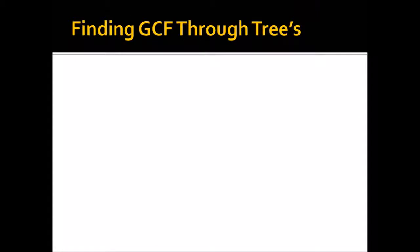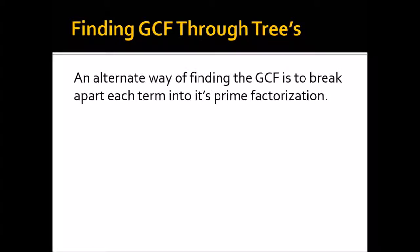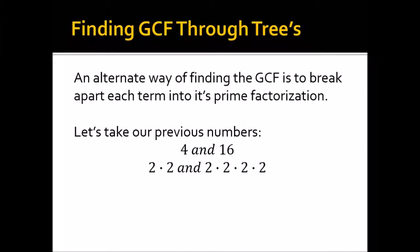So the alternate way to find the greatest common factor is through a tree. And this is the most popular way that is taught now in most colleges and high schools. And the technique for that is to take a number and to break it down into its prime factorization. So let's take our previous numbers, 4 and 16, and break these down into our prime factorization. So 4 is the product of 2 and 2, and 16 is the product of 2, 2, 2, and 2.